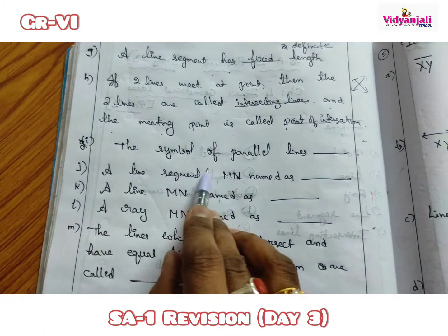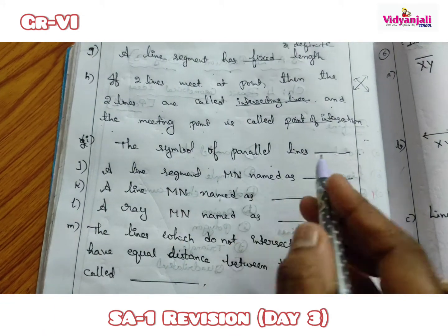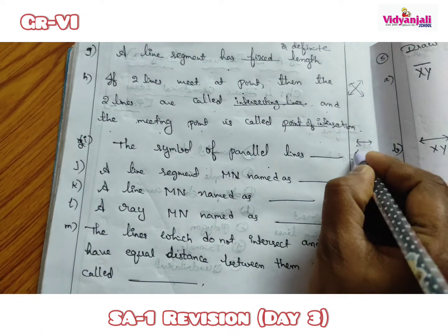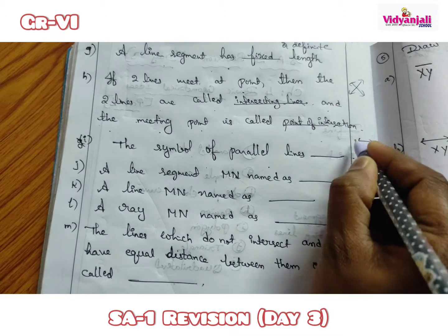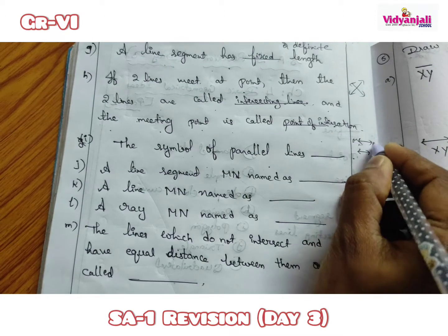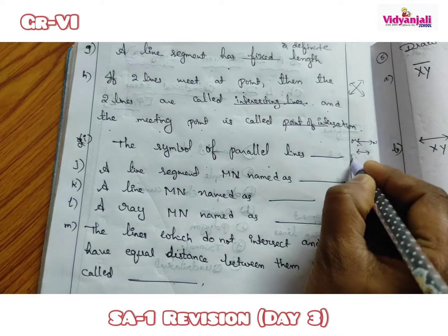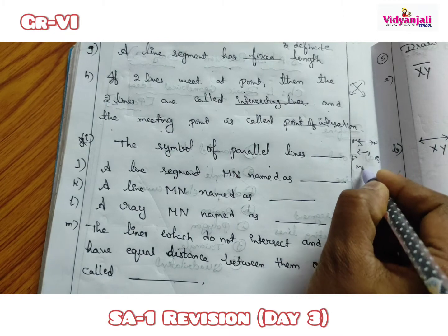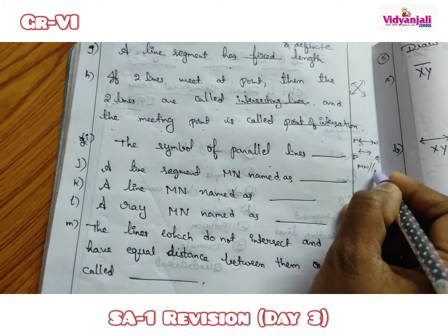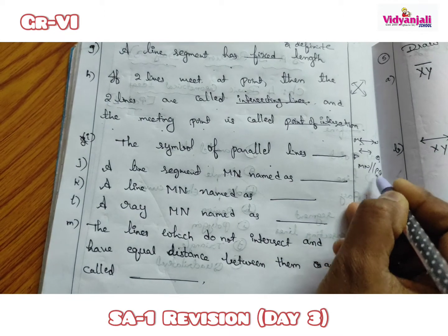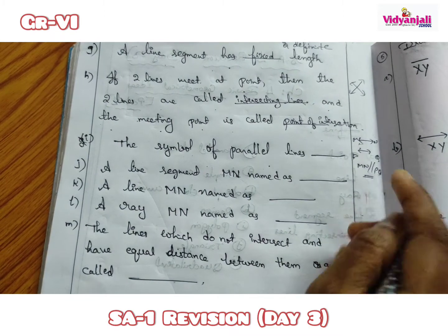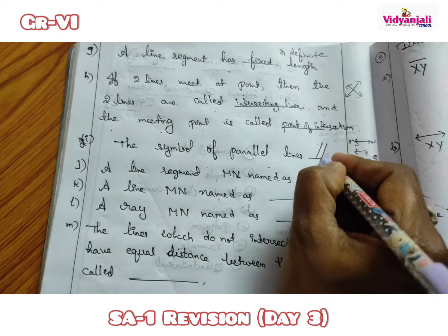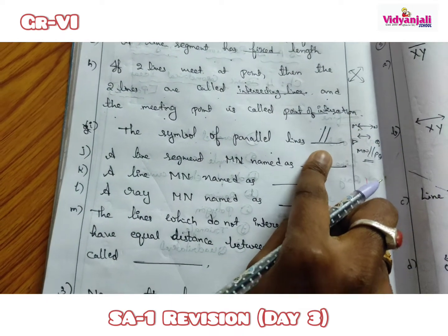The symbol for parallel lines — suppose two lines MN and PQ are parallel, then we say MN parallel to PQ. This double vertical bar symbol is called the parallel symbol.